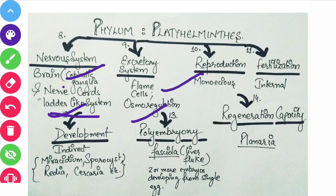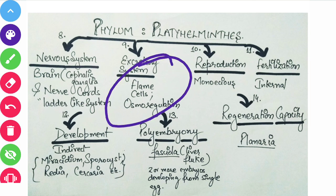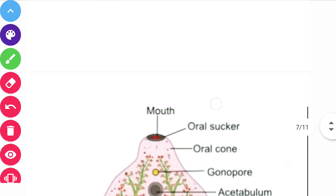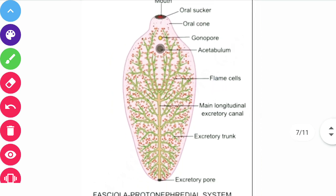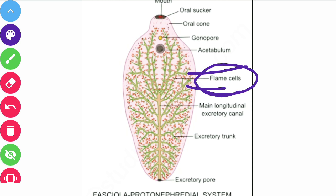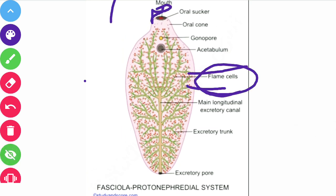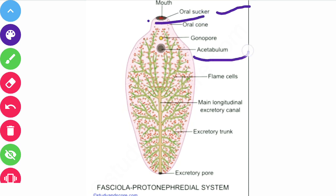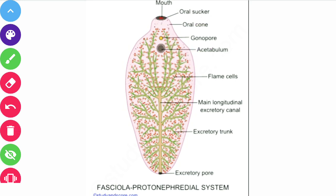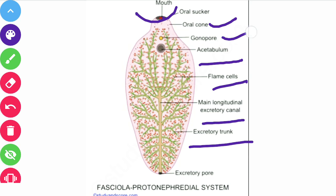The excretory system consists of flame cells — this is a very important property of Platyhelminthes frequently asked in examinations. This is Fasciola hepatica, which shows flame cells represented here. It has an oral sucker and a ventral sucker called the acetabulum — two suckers in total. There is a single opening, a longitudinal excretory canal, a gonopore, and flame cells for excretion.